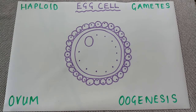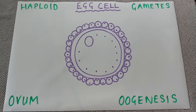Egg cells are large and non-motile cells, which means they aren't really able to move. In terms of contributions to a zygote, what they contribute is all of the organelles inside and the cytoplasm as well.